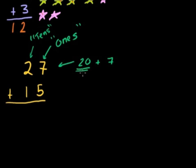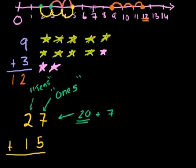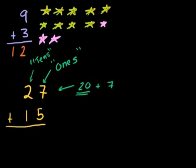The way to do these problems: look at the numbers in the ones place and add those up first. Don't worry about the whole thing — just add the 7 and the 5. If you add 7 and 5 on the number line: start at 7 and add 5 — 1, 2, 3, 4, 5 — we end up at 12. So 7 plus 5 is equal to 12.